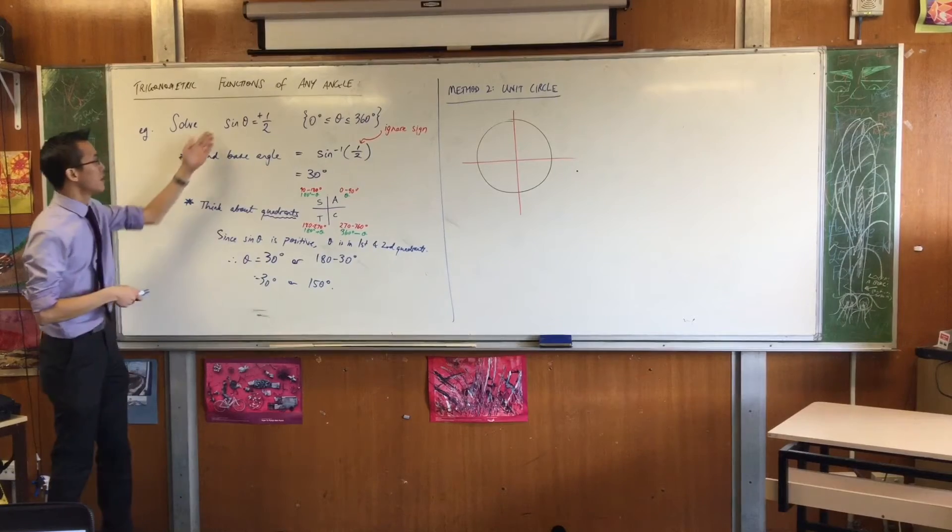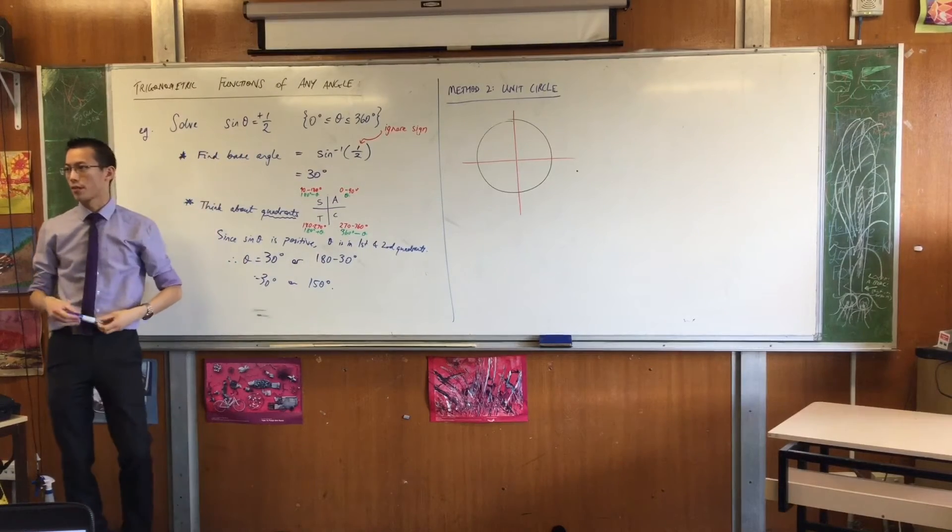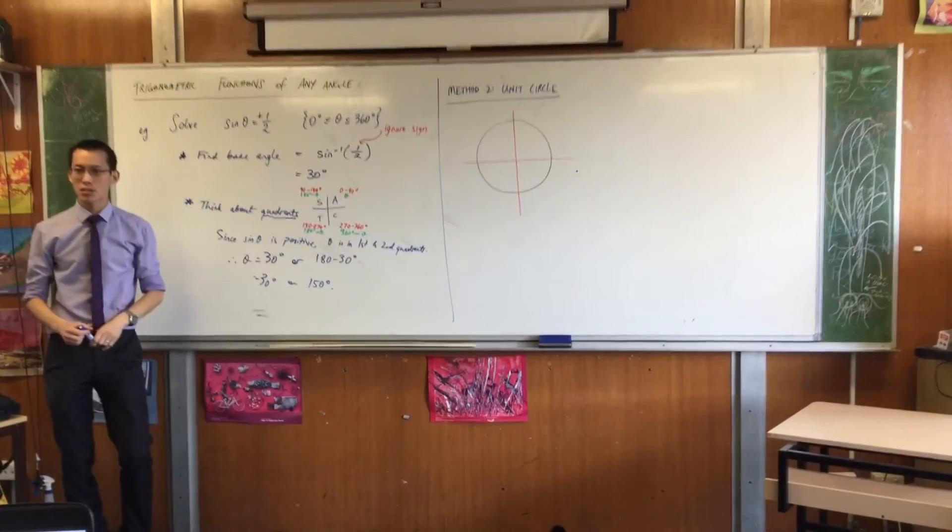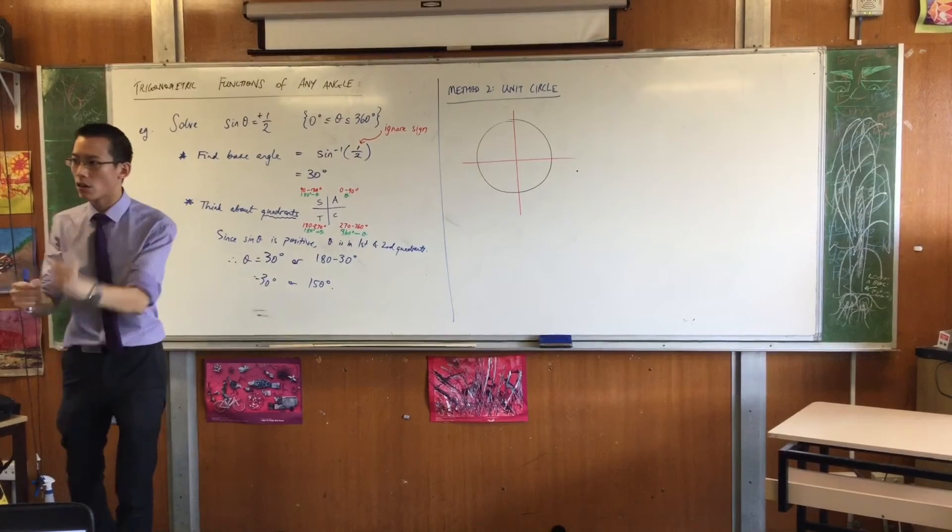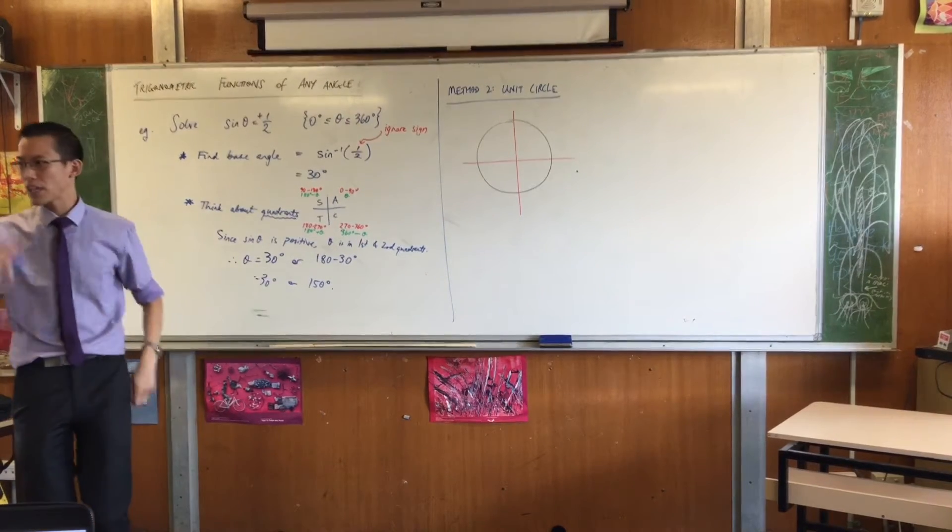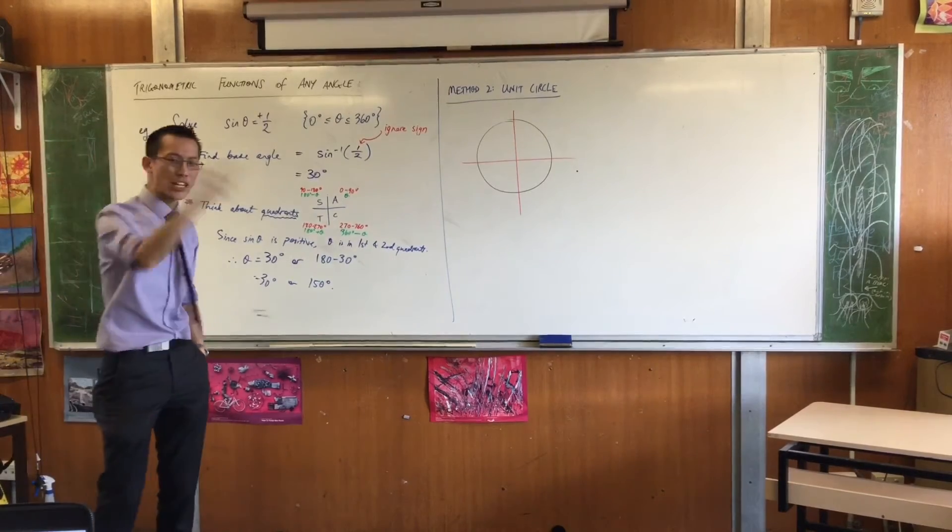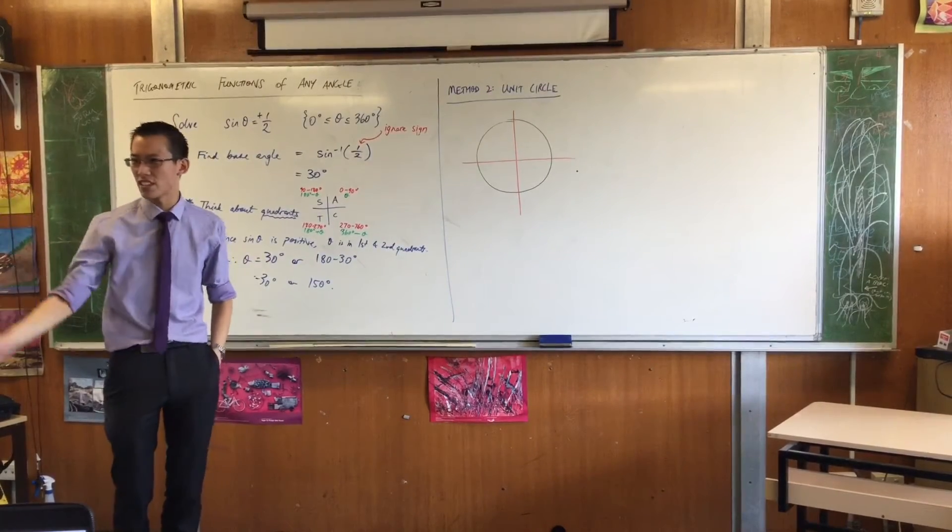Now the question says sine theta equals plus a half. Now the hardest thing to remember is we redefined sine, cos, and tan. We said, you know what, forget about those right angle triangles, forget about that opposite hypotenuse adjacent stuff.